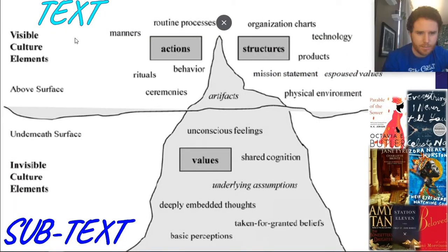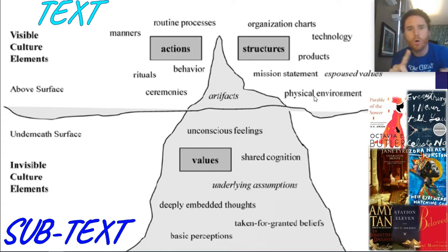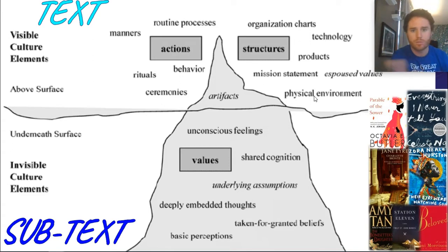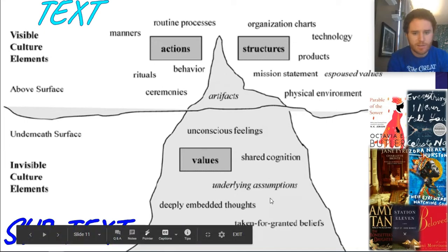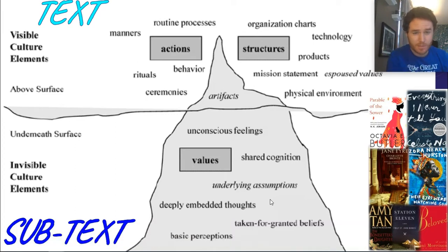The text is up here — these are all the things we can see on the surface level. The behaviors, the rituals, the artifacts, the physical environment. We see those when we read a poem, a novel, or just in our own world. Read the world like it's a text. This is the stuff down here — the subtext — that's the stuff that's harder. That's what an AP Lit student trains themselves to see.